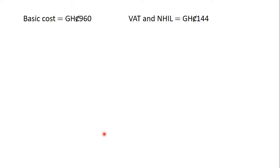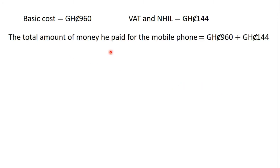The second part of the question wants us to find the total amount of money he paid for the mobile phone. The basic cost is 960 Ghana cedis and the amount he paid as VAT and NHIL is 144 Ghana cedis. So, the total amount is the basic cost plus the taxes: 960 Ghana cedis plus 144 Ghana cedis, which gives us 1,104 Ghana cedis.